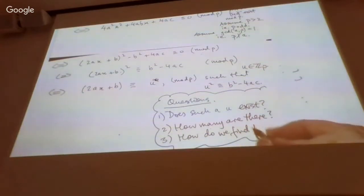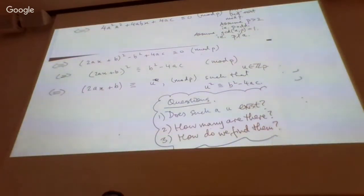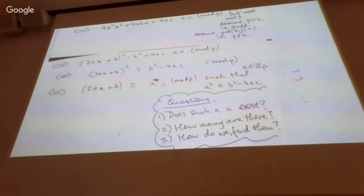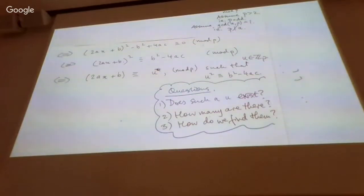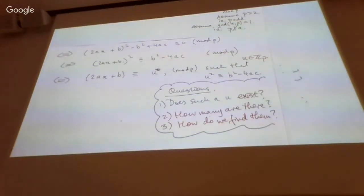For real quadratic equations, finding square roots is well understood — there are fast convergent algorithms like Newton's method that give estimates of any desired accuracy. But for square roots in modular arithmetic, we haven't addressed any of these questions yet in the module.